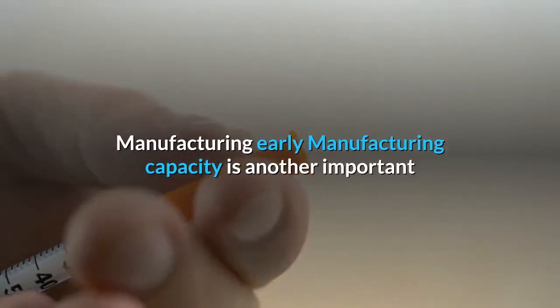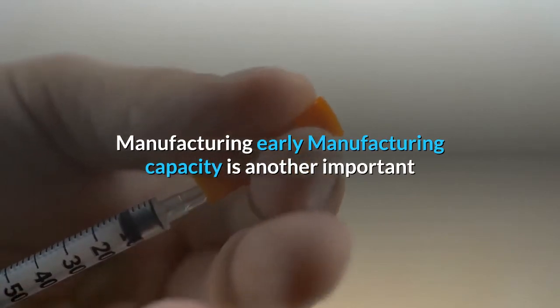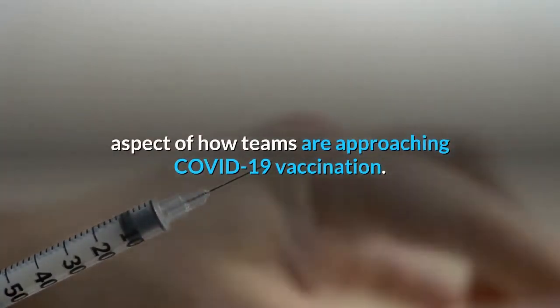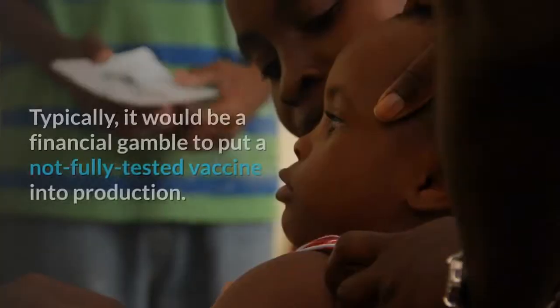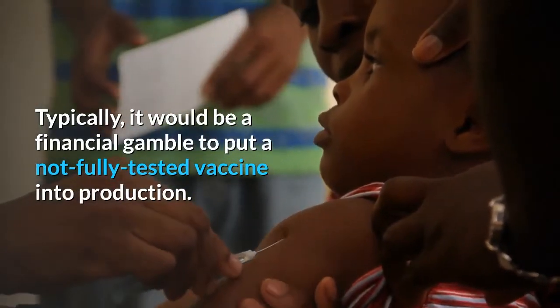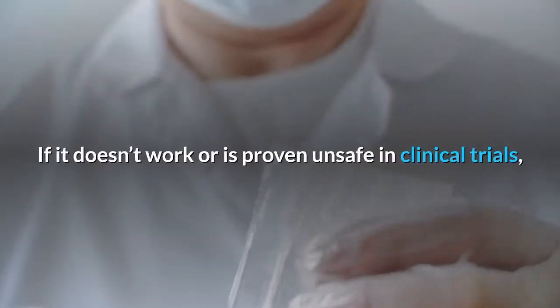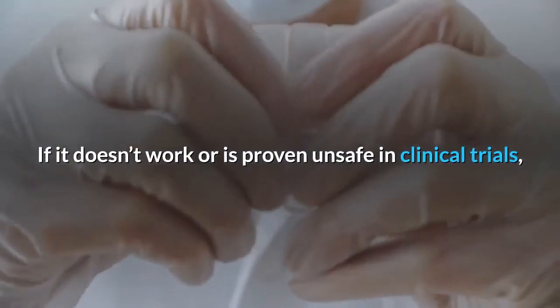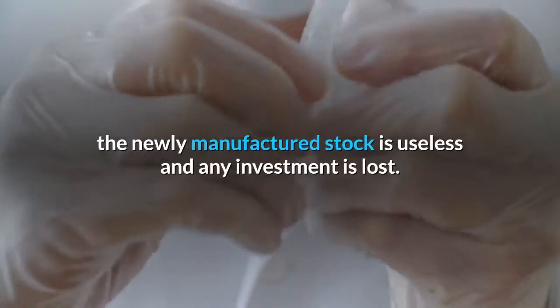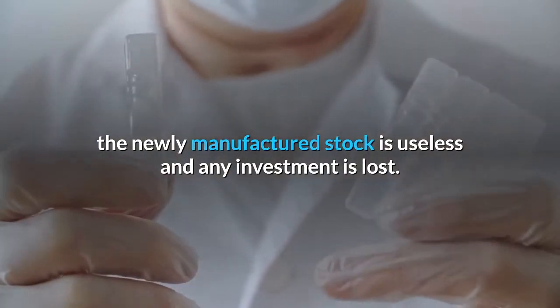Manufacturing. Early manufacturing capacity is another important aspect of how teams are approaching COVID-19 vaccination. Typically, it would be a financial gamble to put a not fully tested vaccine into production. If it doesn't work or is proven unsafe in clinical trials, the newly manufactured stock is useless and any investment is lost.